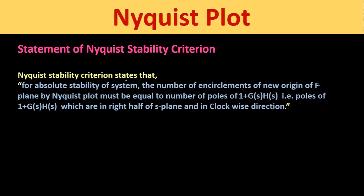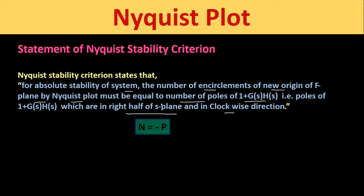Now we will see the statement of the Nyquist stability criterion. The Nyquist stability criterion states that for absolute stability of the system, the number of encirclements of the origin of the F-plane by the Nyquist plot must equal the number of poles of 1 + G(s)H(s) that are in the right half of the s-plane, in the clockwise direction. That is, N must equal minus P in the clockwise direction.